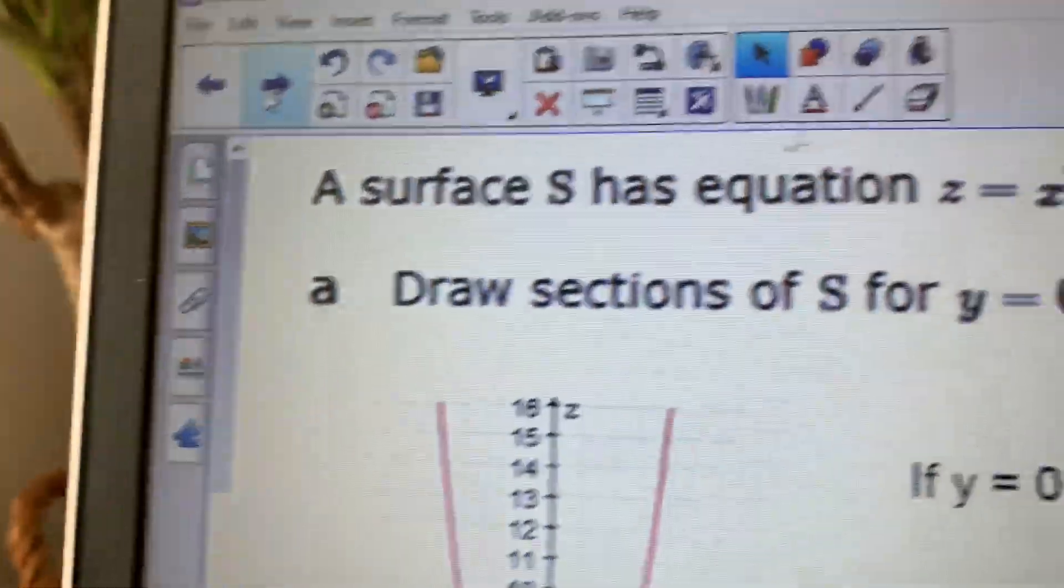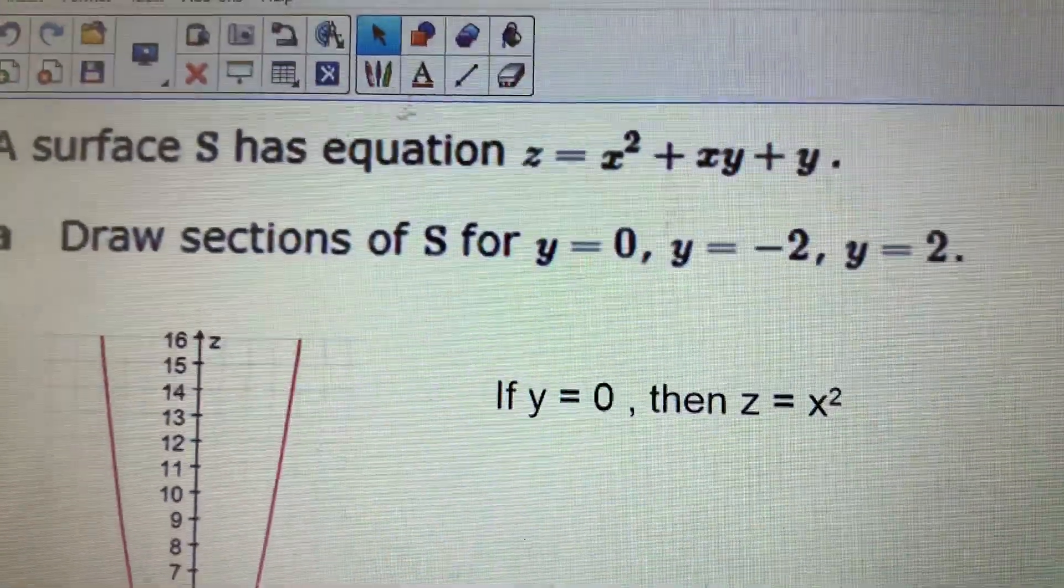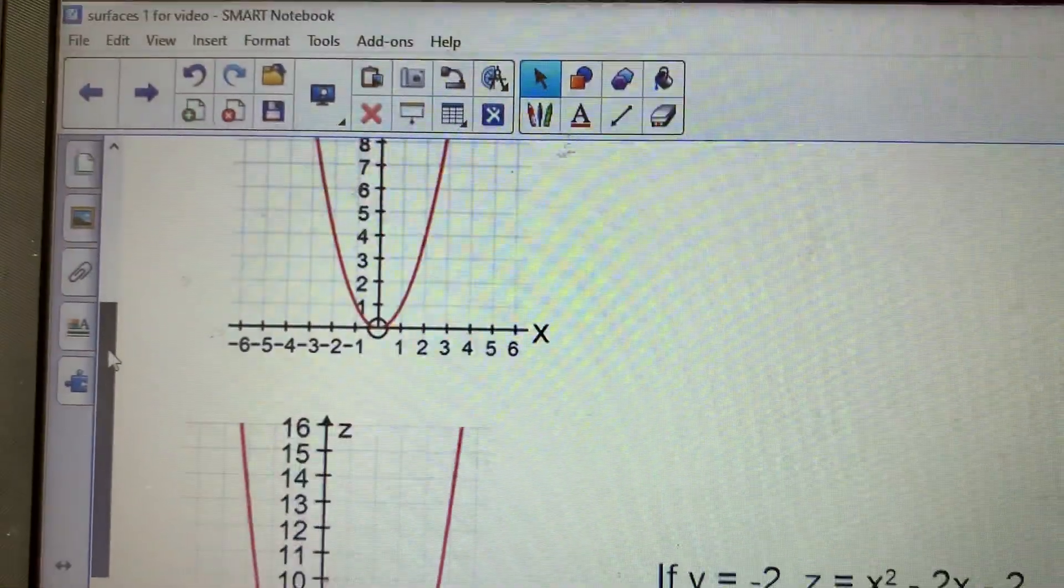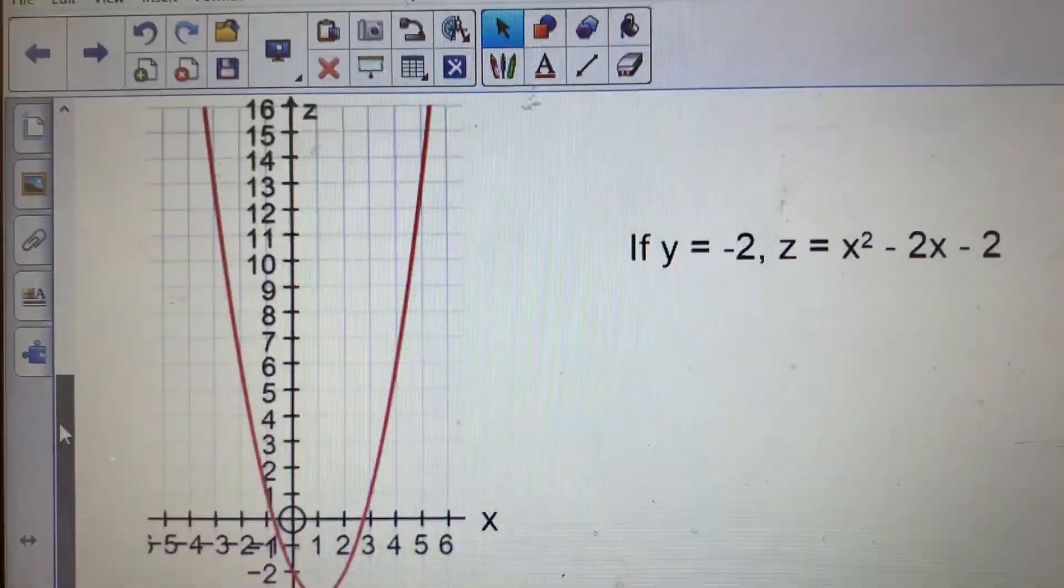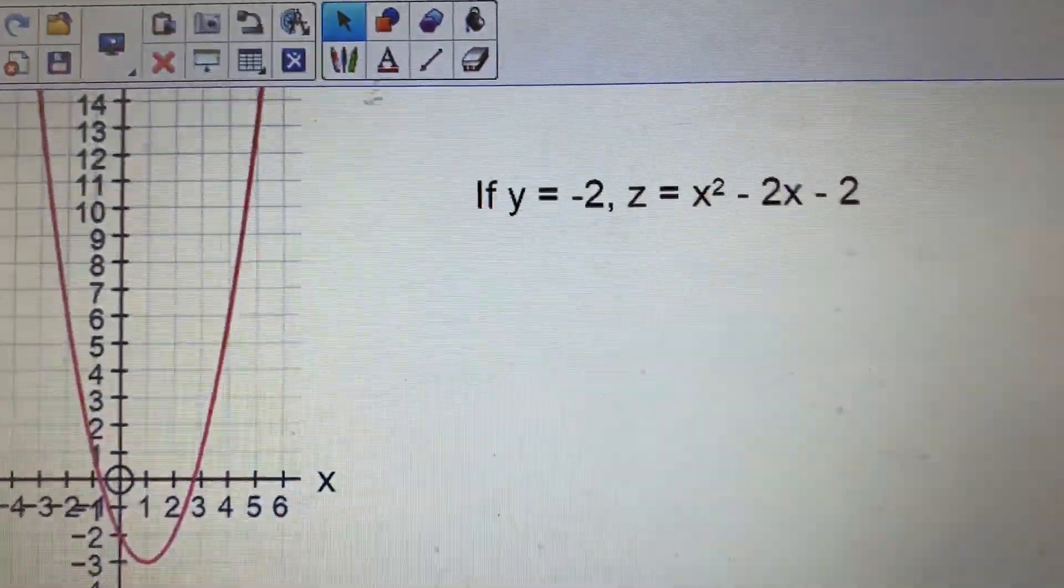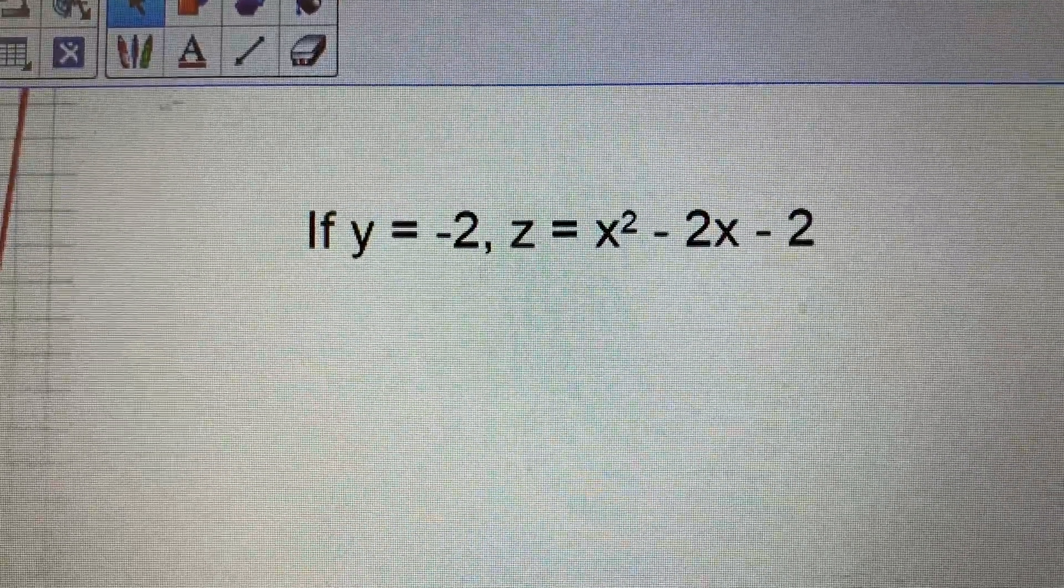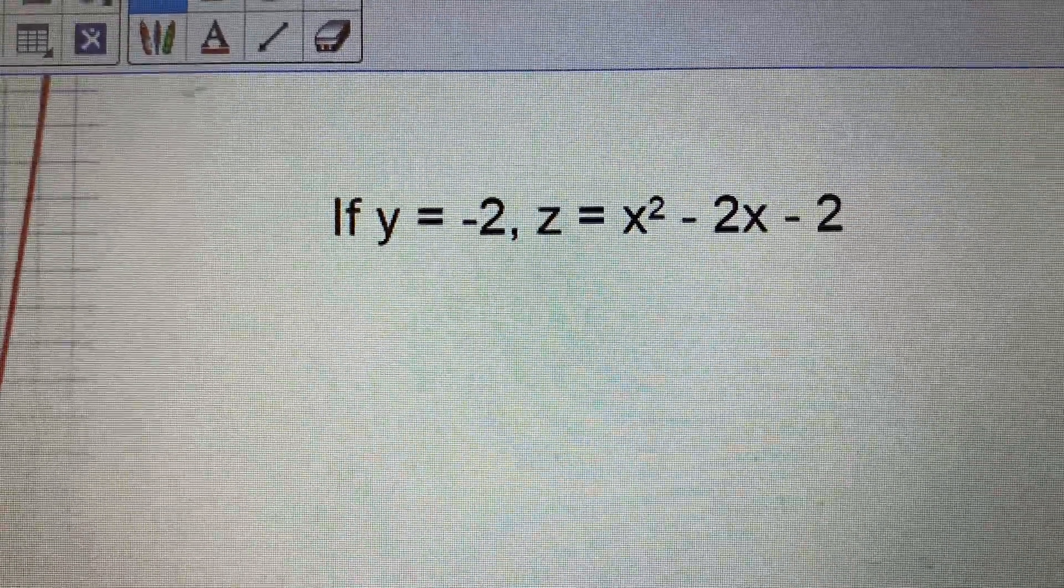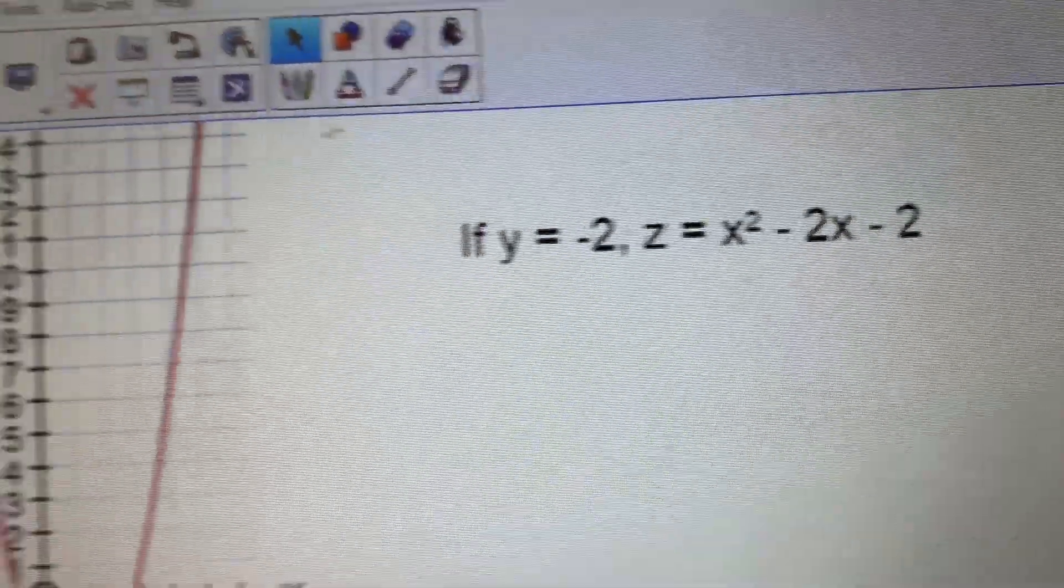You're then going to let Y equal minus 2. So if I replace in that original equation, the Y with a negative 2, that's the graph that I then get. So that's the graph I sketch.